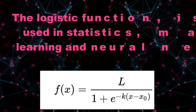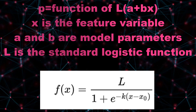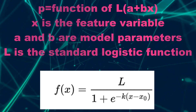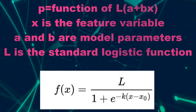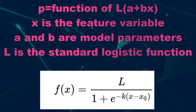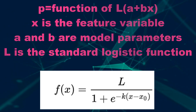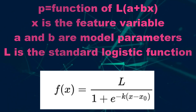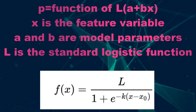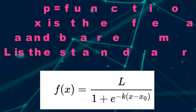The logistic function is used in logistic regression to model how the probability p of an event may be affected by one or more feature variables. The example model would be: p is equal to f(a + bx), where x is the feature variable, a and b are model parameters, and f is the standard logistic function.